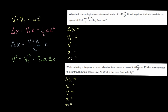So with that out of the way, let's dive into our first example. The question says: a light rail commuter train accelerates at a rate of 1.35 meters per second squared. How long does it take to reach its top speed of 80 kilometers per hour starting from rest? Let's unpack this. The acceleration is 1.35 meters per second squared — that's pretty direct, it's just telling us what the acceleration is. So let's write that down.